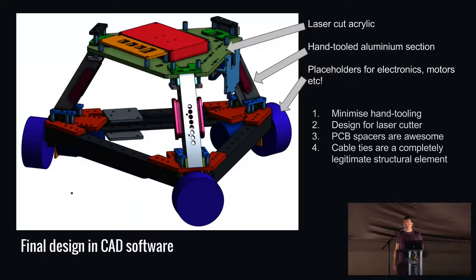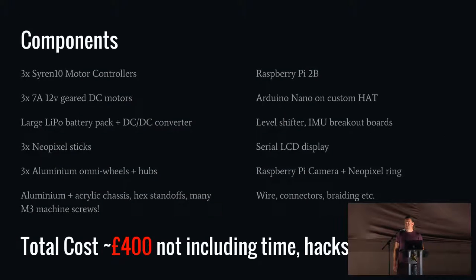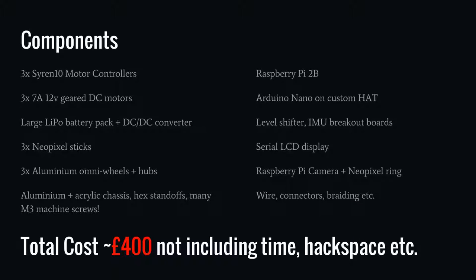The wheels are off the shelf, as are most other components. The bill of materials includes motor drivers — it's much easier to talk to something on a serial bus than to do high-power electrical stuff — three motors, a big LiPo battery pack, a bunch of flashing lights, pre-made aluminium omni wheels, the chassis itself, a Raspberry Pi 2B, an Arduino Nano, some bridging logic and an IMU I'm not actually using. There's also a camera, handy for line following.